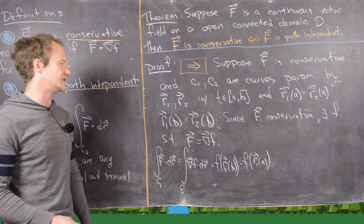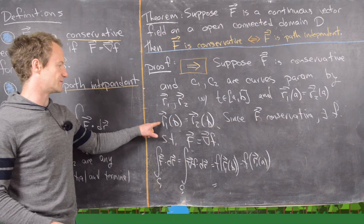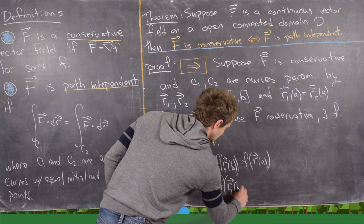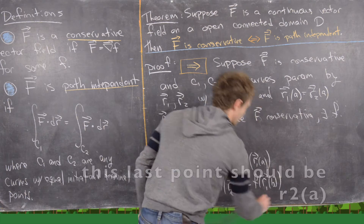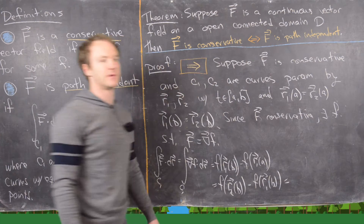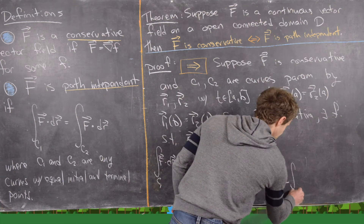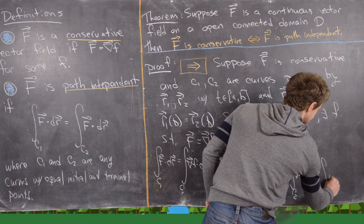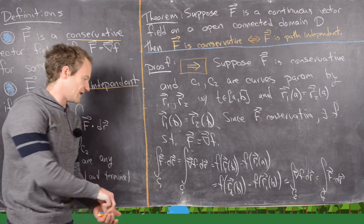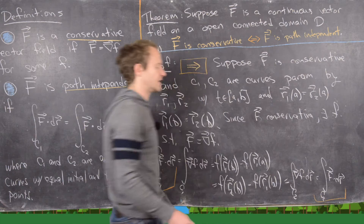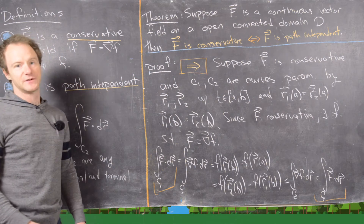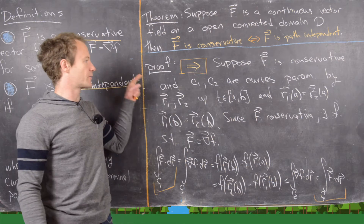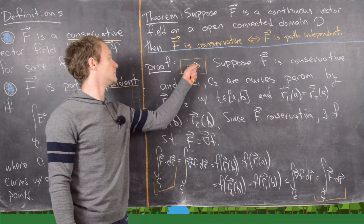Since C1 and C2 share the same endpoints, r1(b) = r2(b) and r1(a) = r2(a), so this becomes f(r2(b)) minus f(r2(a)). Applying the fundamental theorem of line integrals in reverse gives the line integral over C2 of the gradient of little f dotted with dr, which equals the line integral over C2 of capital F dotted with dr. The extreme left and right sides show exactly what we need: F is path independent, completing the forward direction.